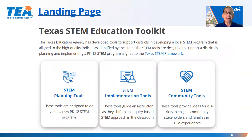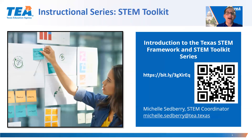To help guide districts in their STEM programming, the TEA has developed a STEM toolkit. The toolkit is divided into three sections and will be covered during the instructional series. Each one of these videos has been kept short as an overview to help users navigate the tools and resources more quickly and efficiently. Following each video, including this one, is a short survey to help us better serve you. Please take a moment to complete the six-question survey — it's a multiple choice, quick-click survey designed to take about one to two minutes.